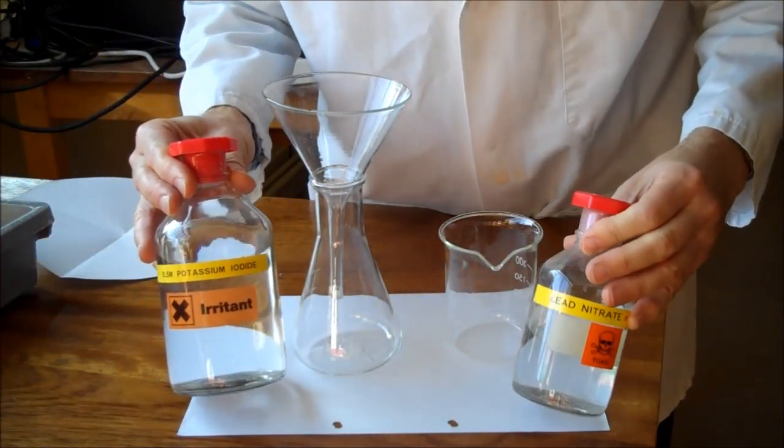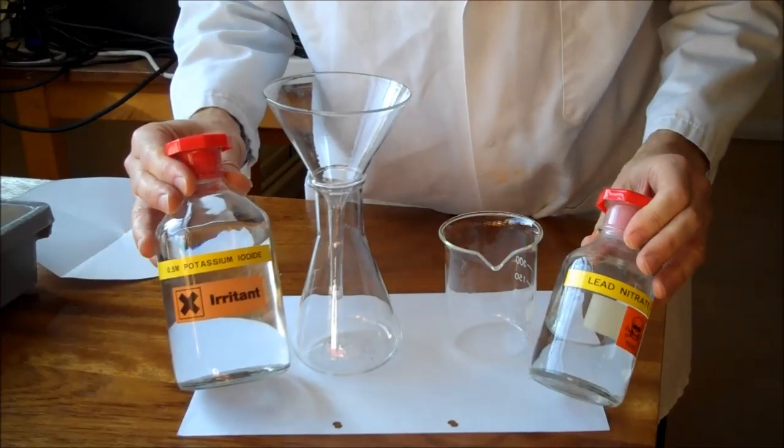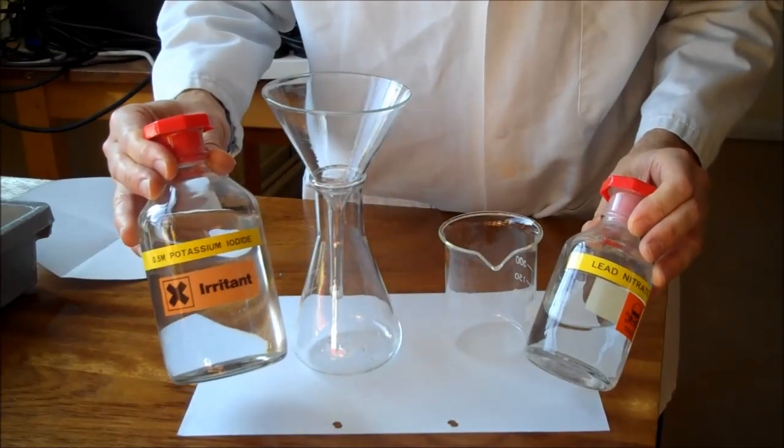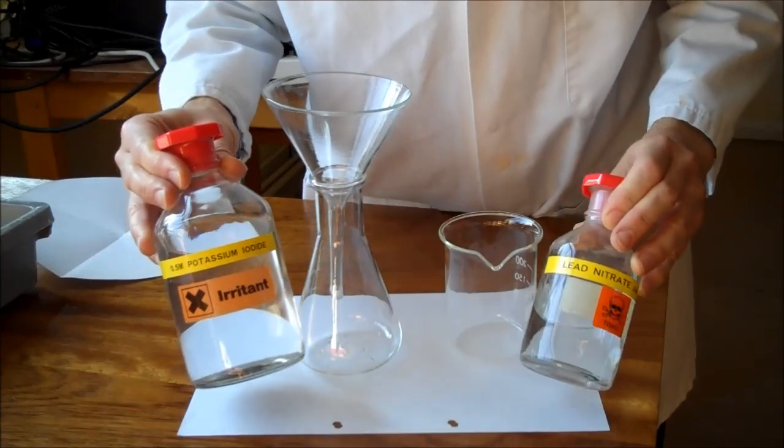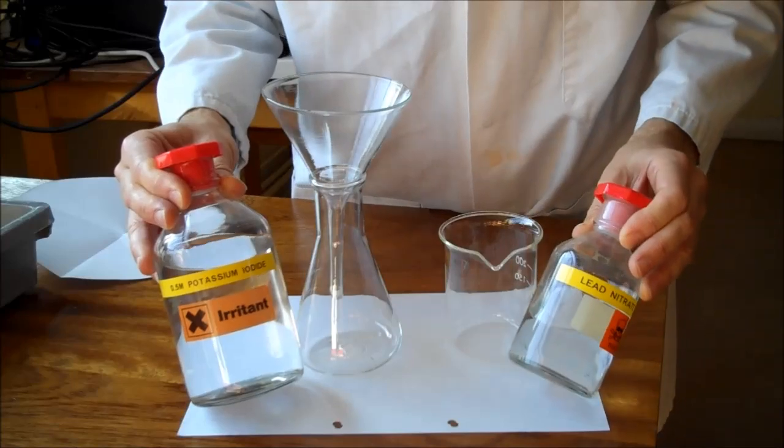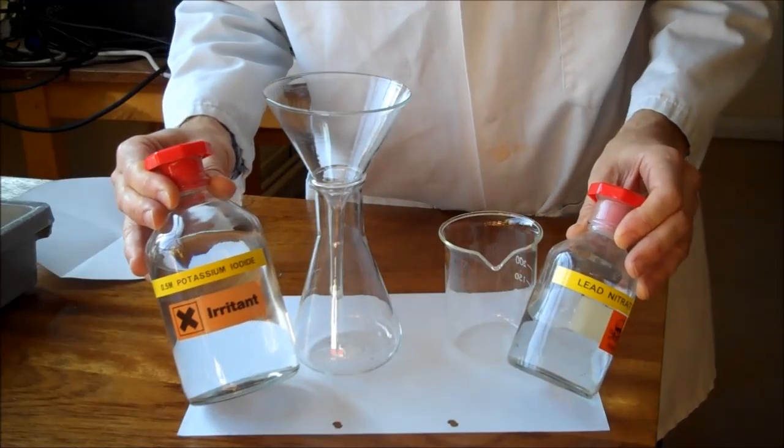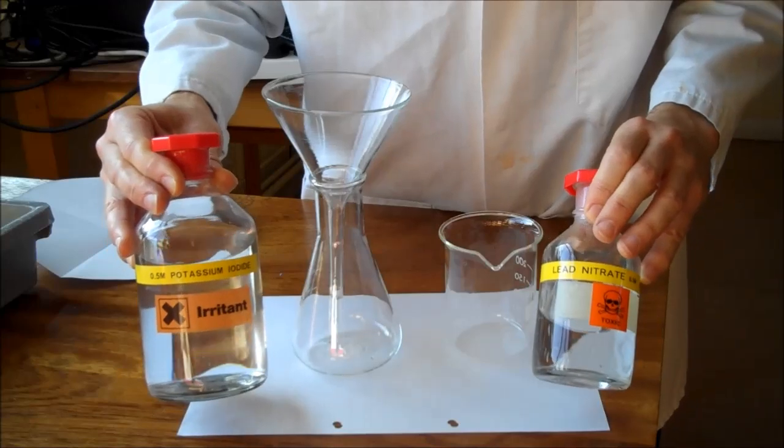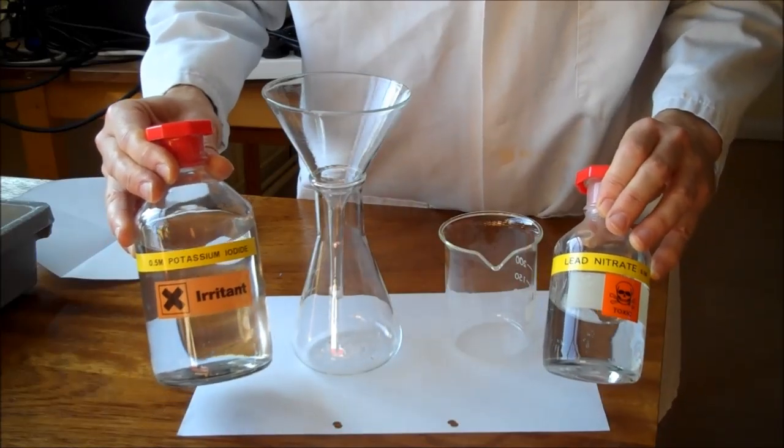Here I have two solutions. We can tell the chemical is fully dissolved because the solutions are clear. In this case they also happen to be colorless, but the two words don't mean the same thing. For example, copper sulfate solution is clear - you can see through it - but it's blue. In these two instances they're both clear and colorless. A solution must be clear.